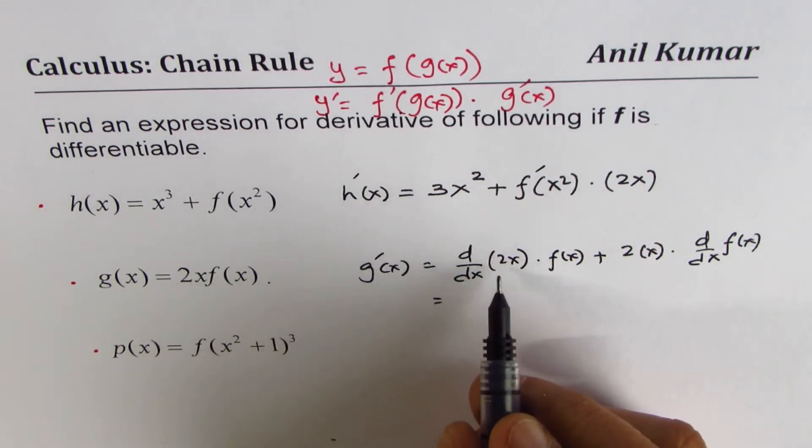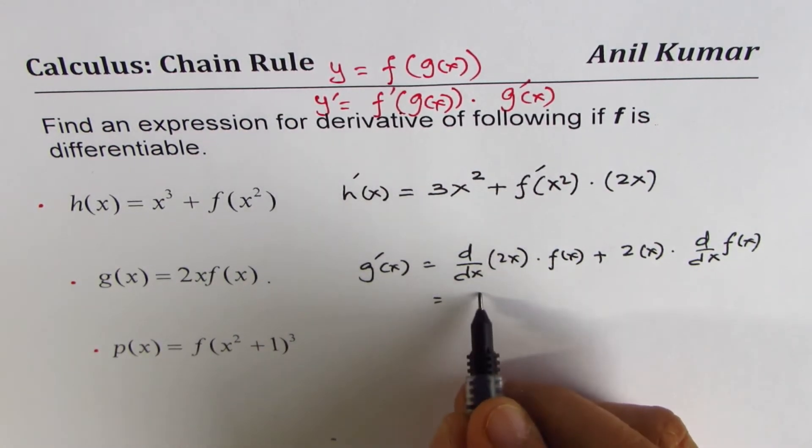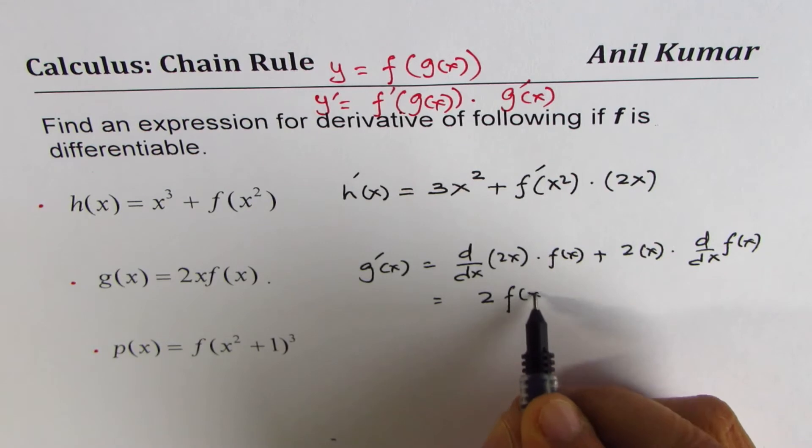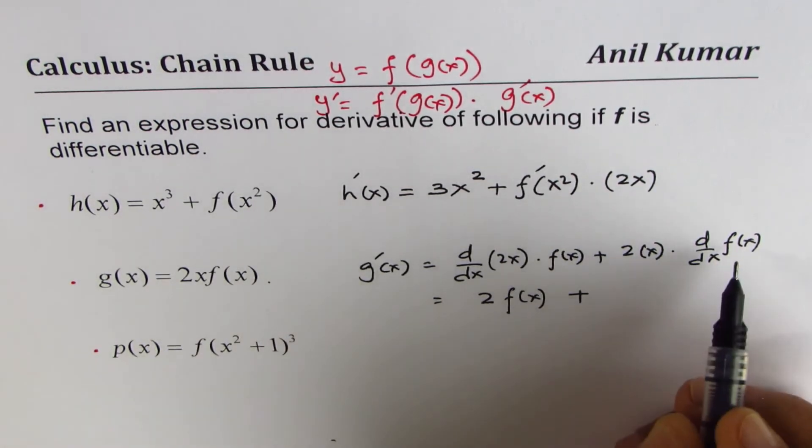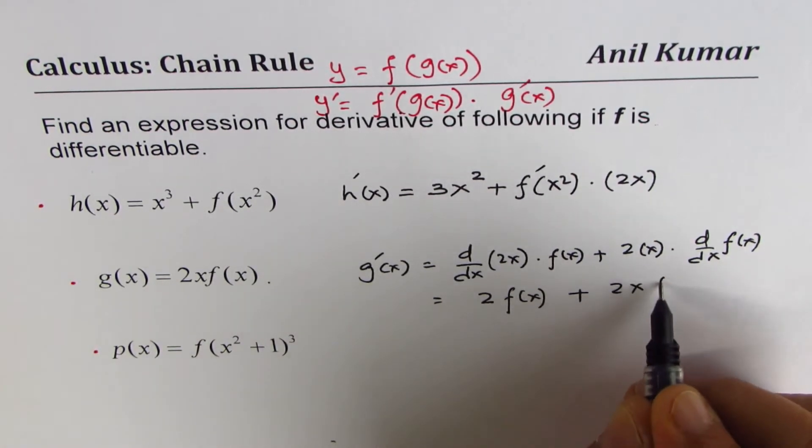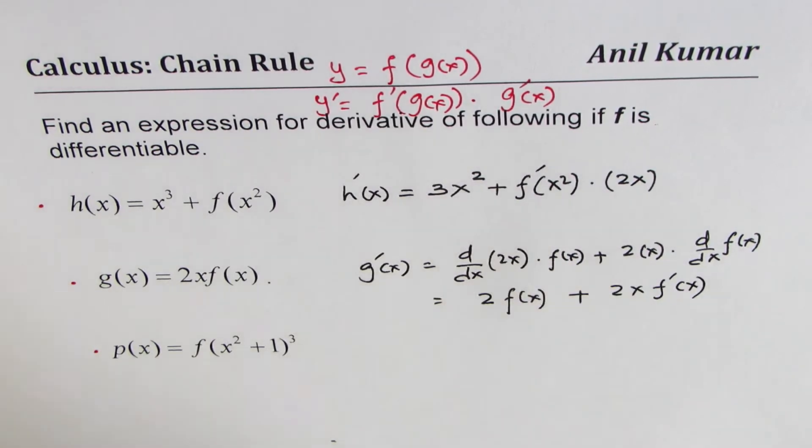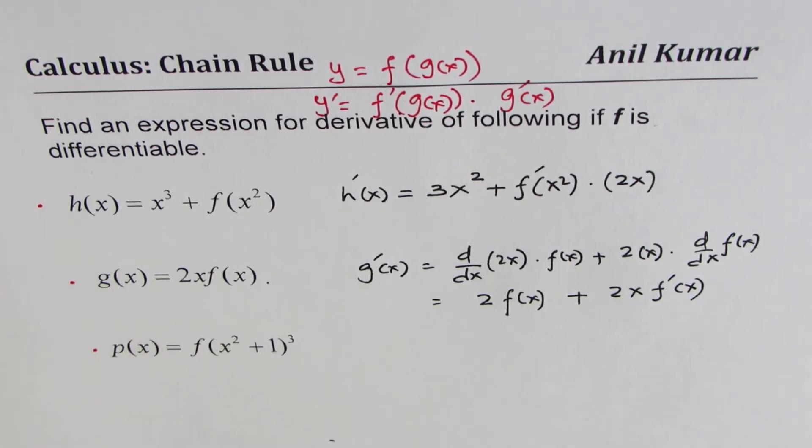and what we get is the derivative of 2x is 2, so we get 2 times f of x plus 2x f prime of x. So that becomes the derivative using the product rule.